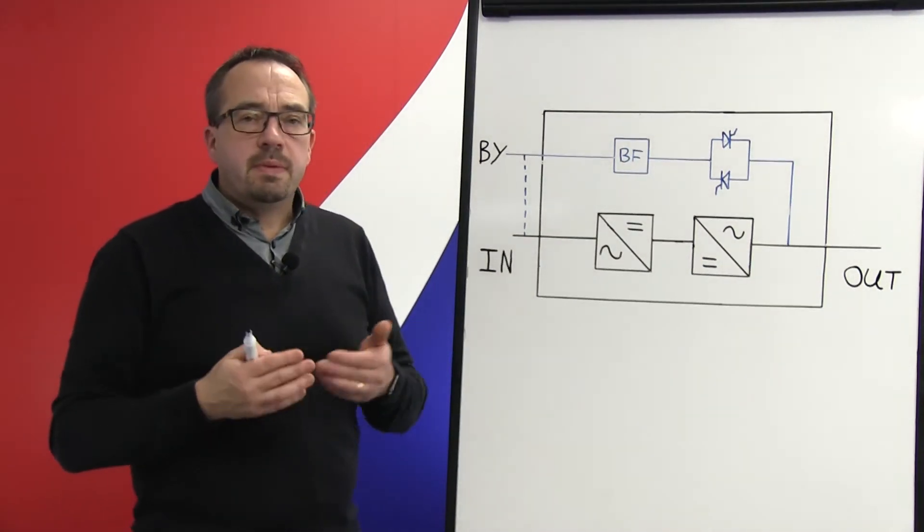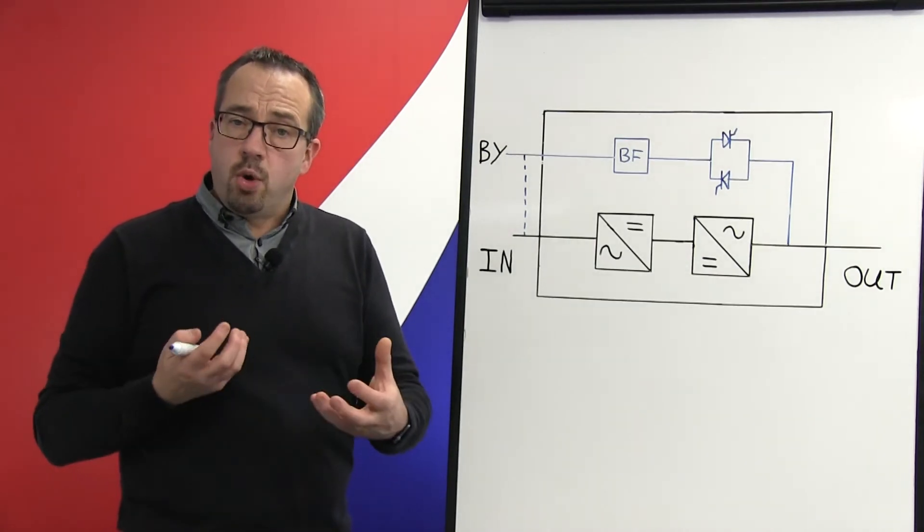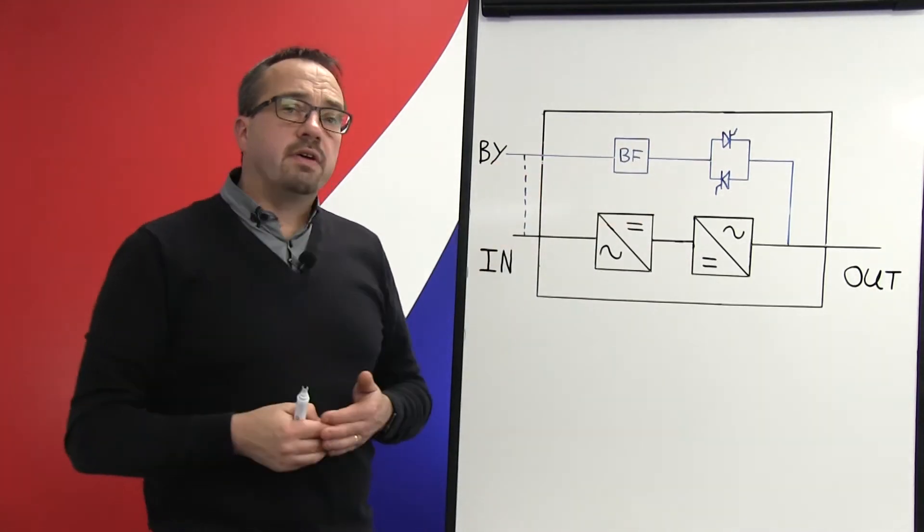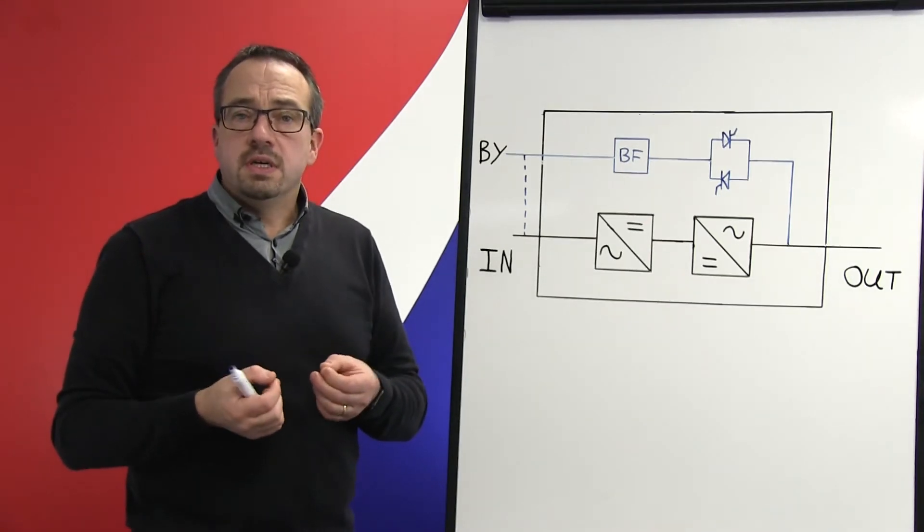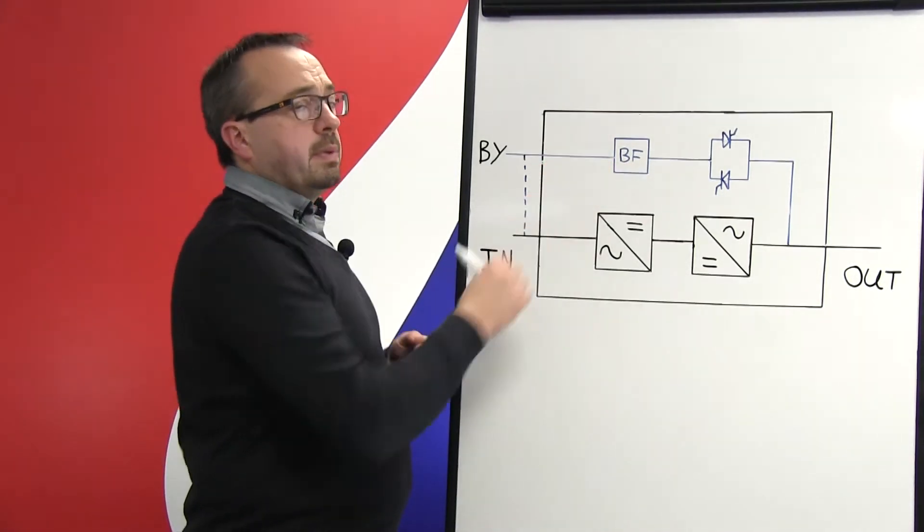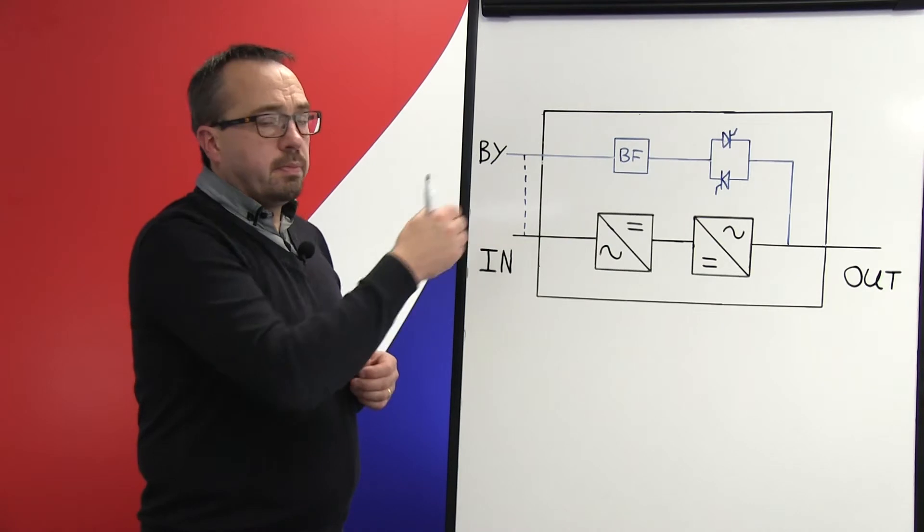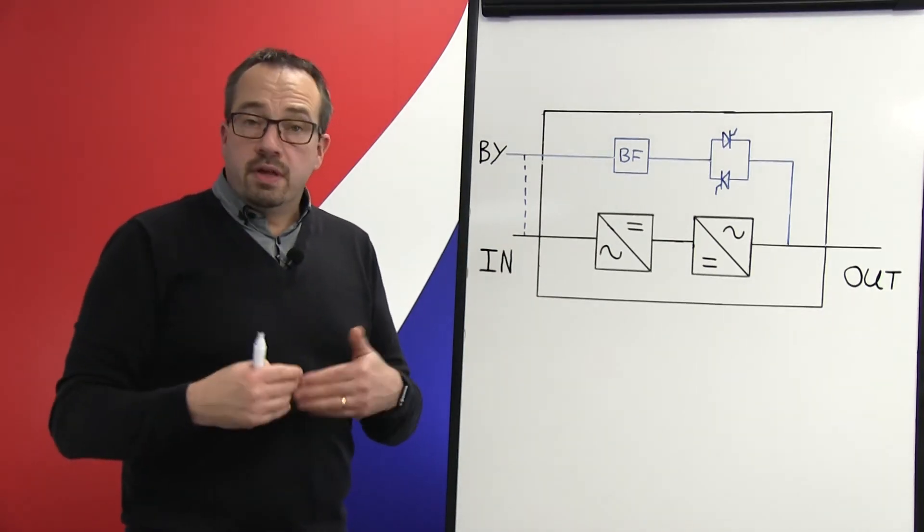The back feed protection device is typically made up of either a contactor which will physically open so we can't pass any current back, or it will be via a current device so that if we measure any current flowing in the bypass line when we are on battery operation, the UPS can take the appropriate action.